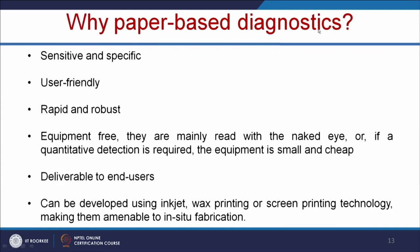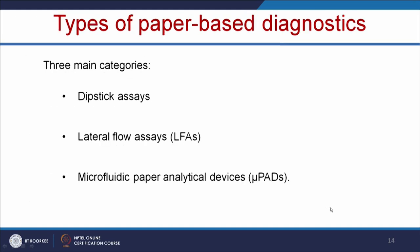Why do we need paper-based diagnostics? As mentioned earlier, they are sensitive, specific, user-friendly, rapid, robust, and equipment-free — we do not need any sophisticated equipment. They are mainly read by the naked eye, or if quantitative detection is required, the equipment is small or cheap. They are deliverable to end users and can be developed using inkjet, wax printing, or screen printing technology. There are three types of paper-based diagnostics: dipstick assays, lateral flow assays, and microfluidic paper analytical devices.